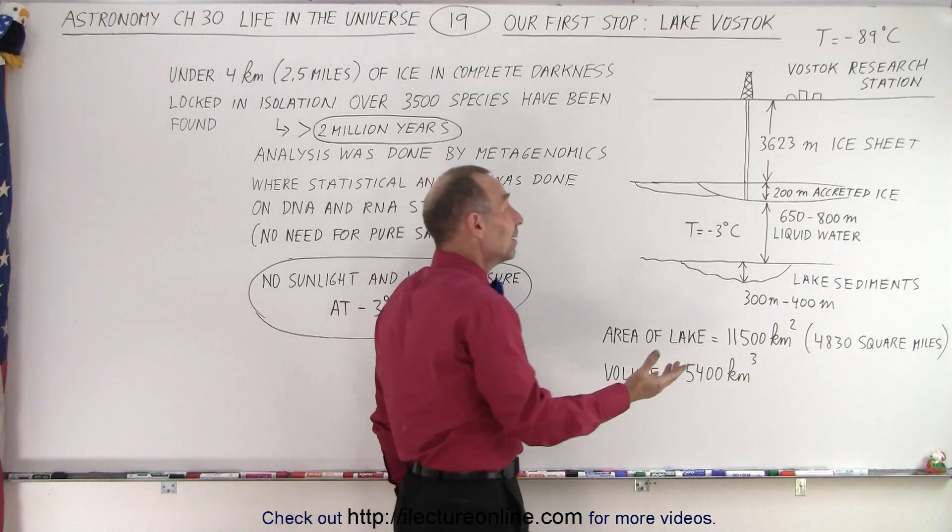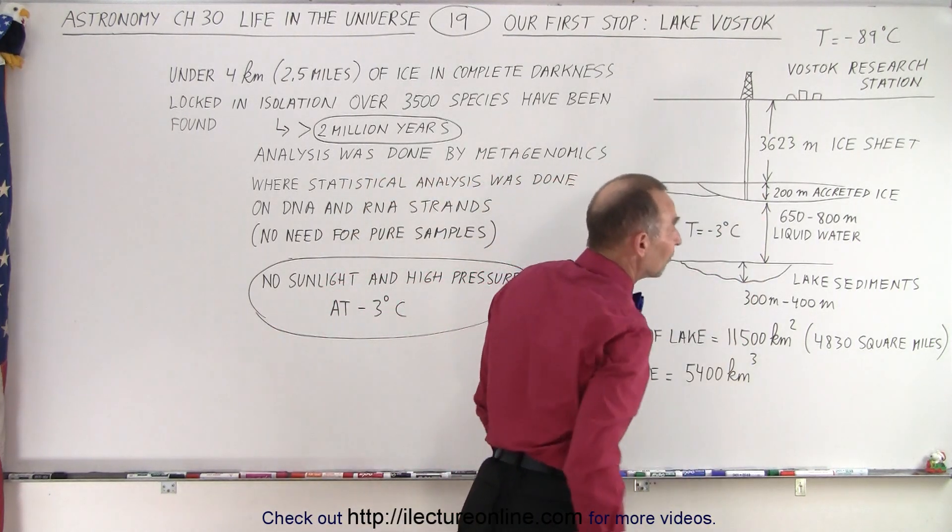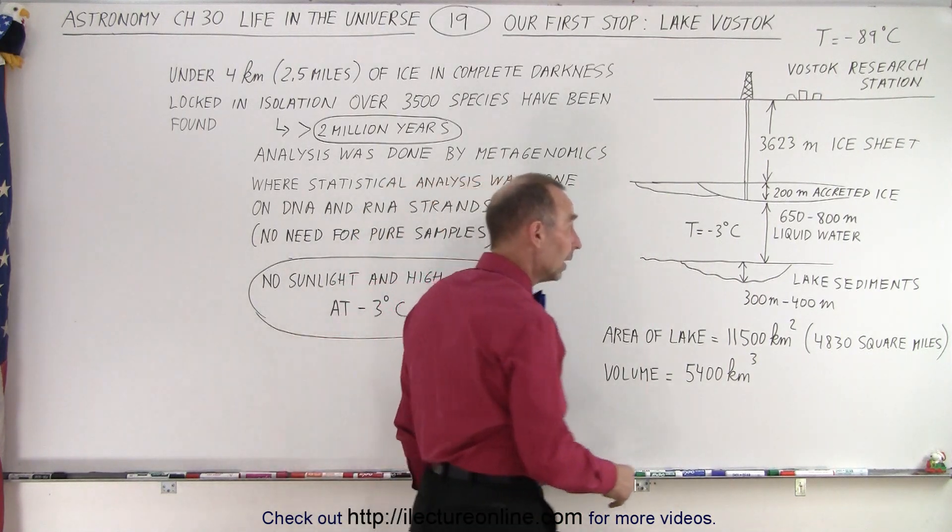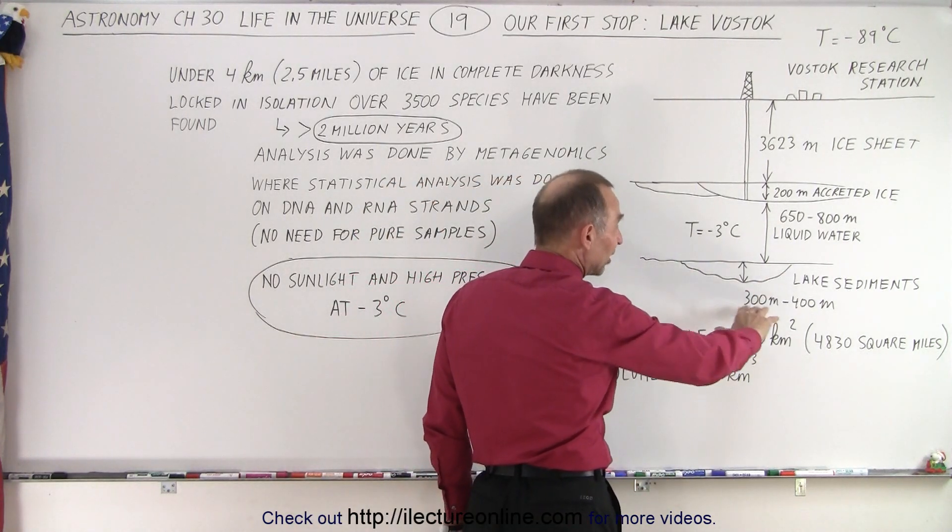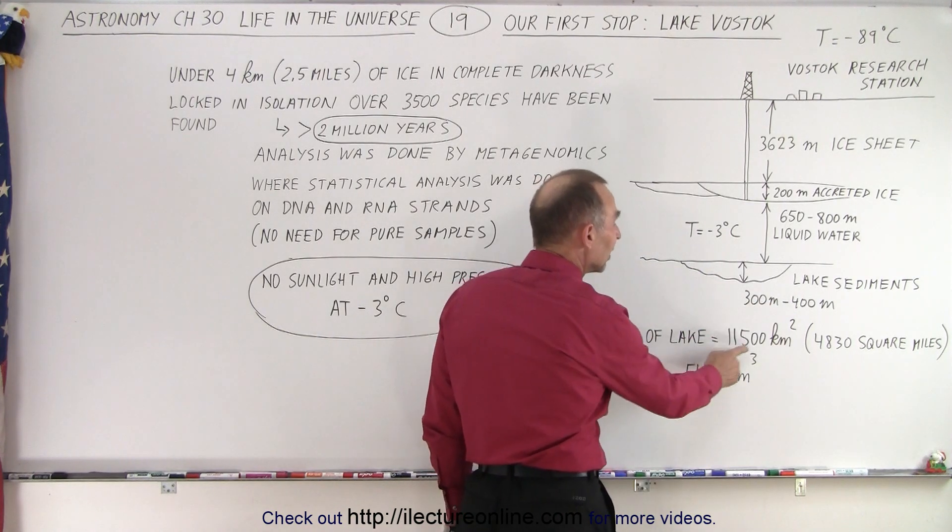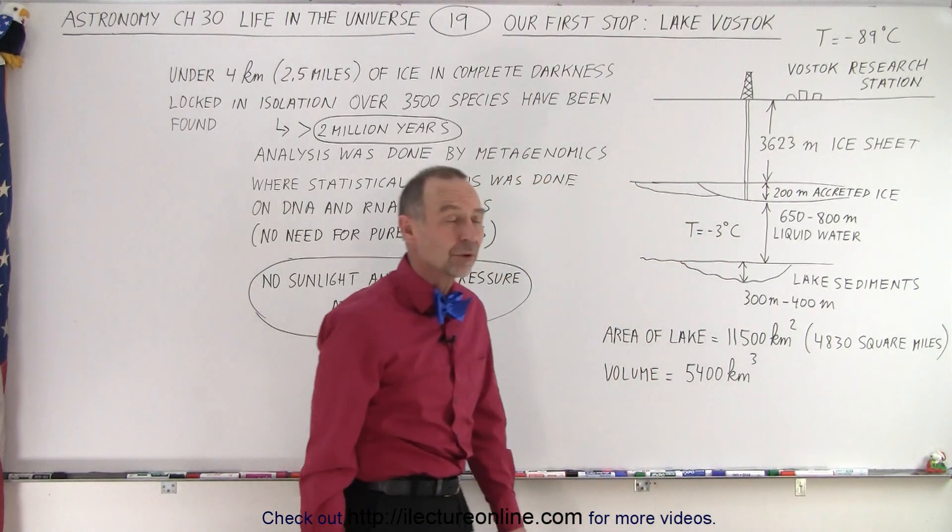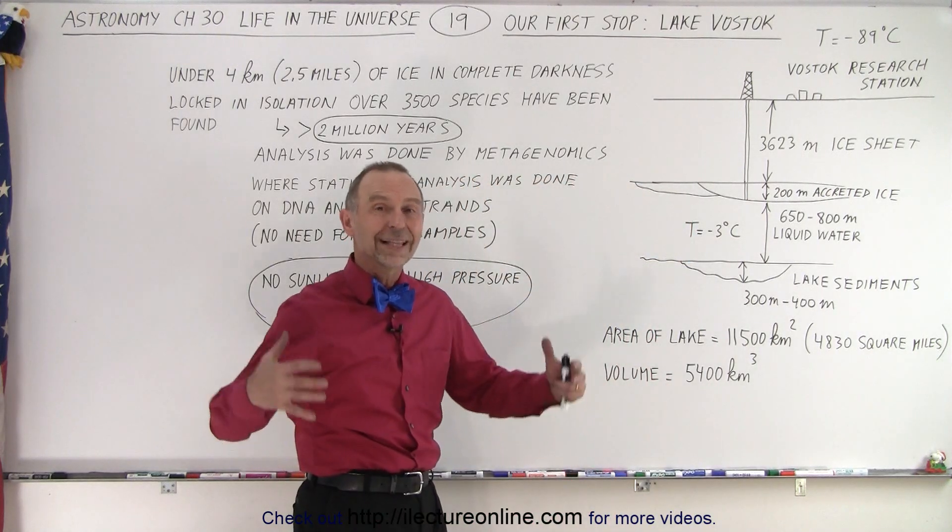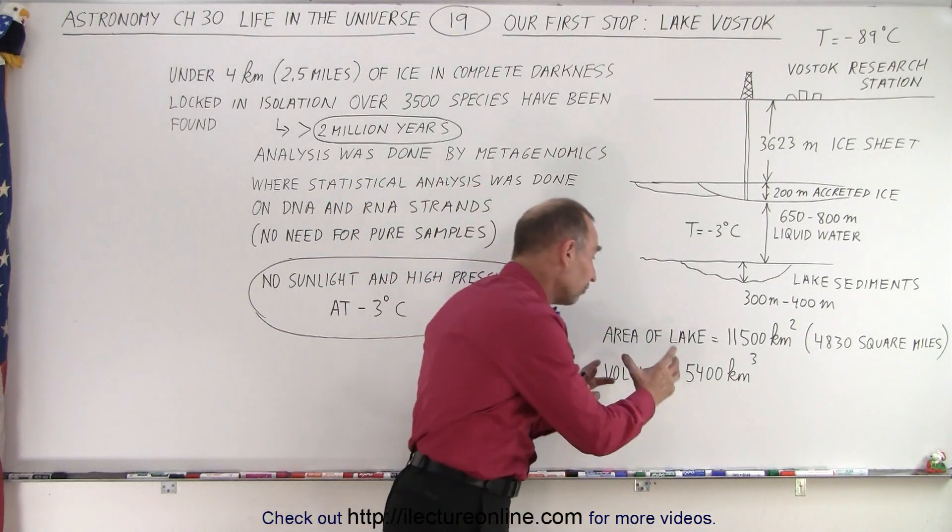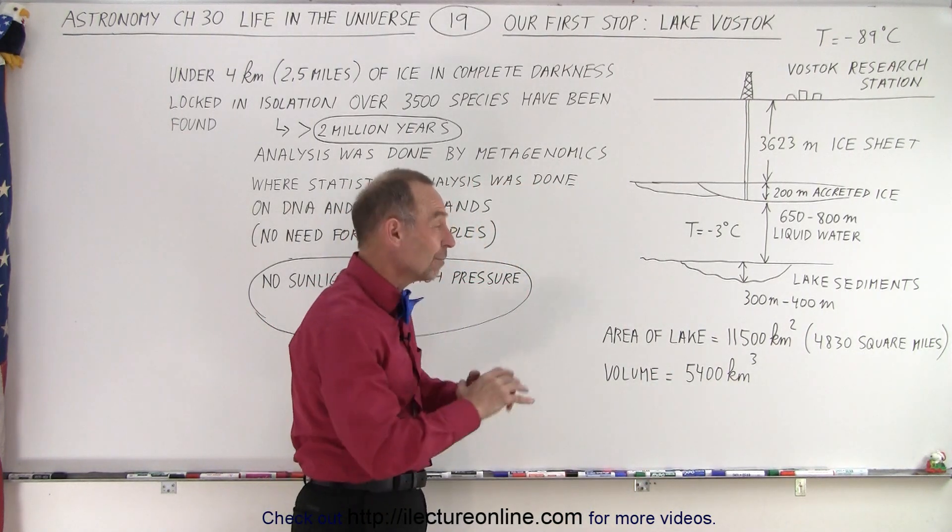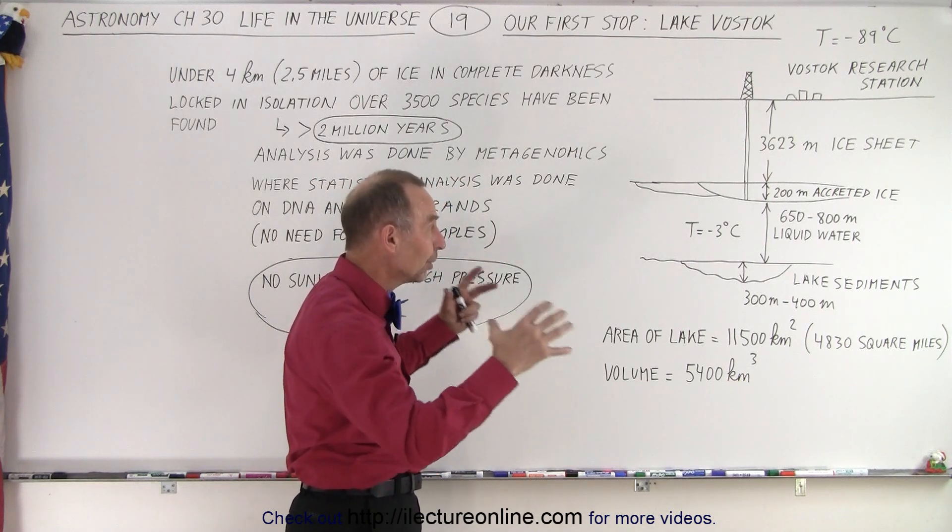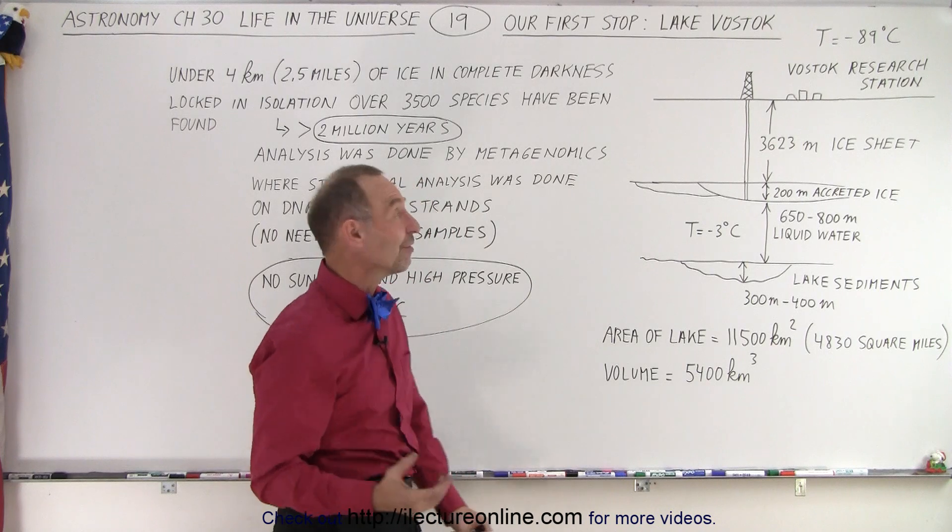How big is this lake? The depth of the lake is between 650 and 800 meters, that's a half a mile. Below the lake we have sediments that are about 300 to 400 meters thick. The area of the lake is 11,500 square kilometers, that's about one-third the land area of Belgium. This is a huge lake and it has a volume of about 5,400 cubic meters of water. That is just an incredible amount of water below that ice sheet.